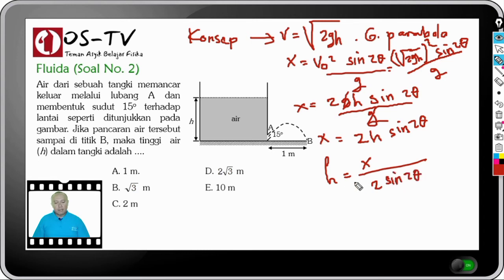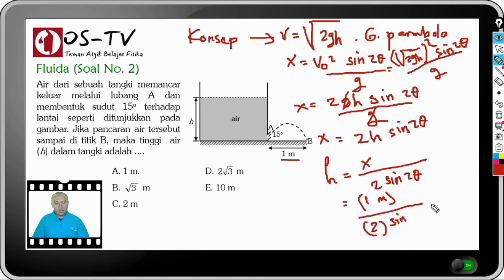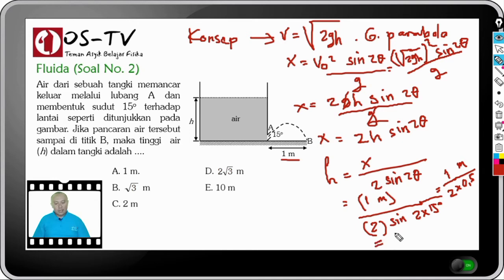Berdasarkan informasi soal, nilai X = 1 meter dan θ = 15 derajat. Maka H = 1 / (2 × sin 30°) = 1 / (2 × 0,5) = 1 meter. Jawabannya adalah A.